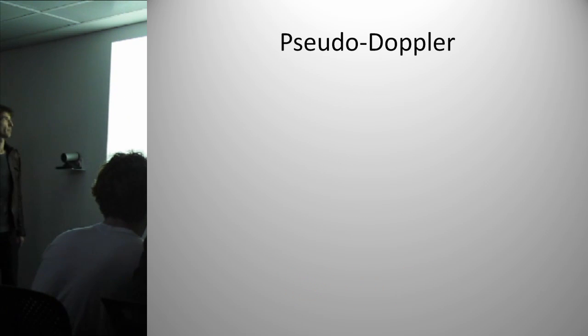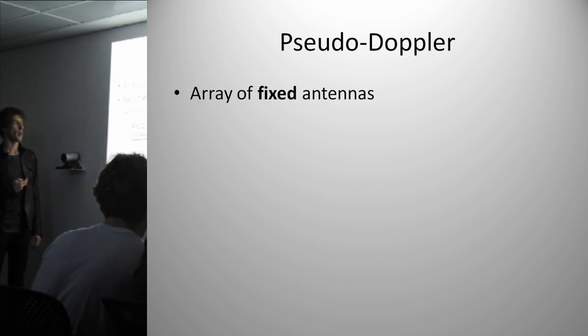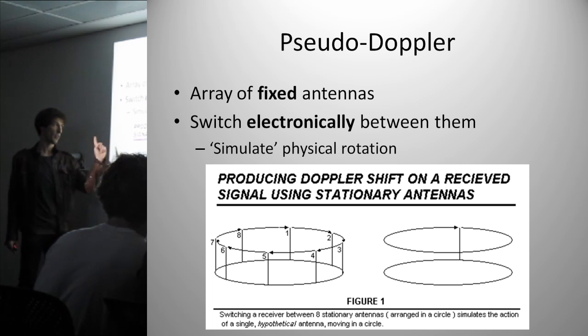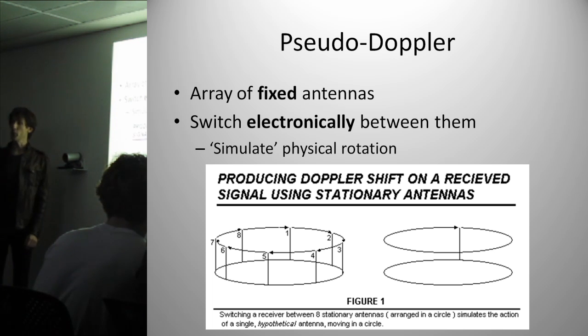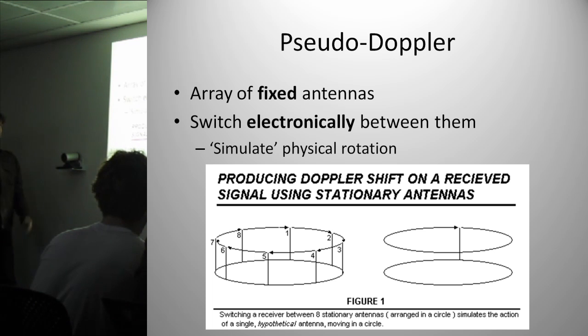How do I get around that? Pseudo Doppler. So what you do is you have an array of fixed antennas, instead of having one in a circle. For example, you might have eight around the circumference of the circle. And what you do is you switch electronically between them quite quickly. And using this, you can simulate the physical rotation of a single antenna to reproduce that Doppler effect.